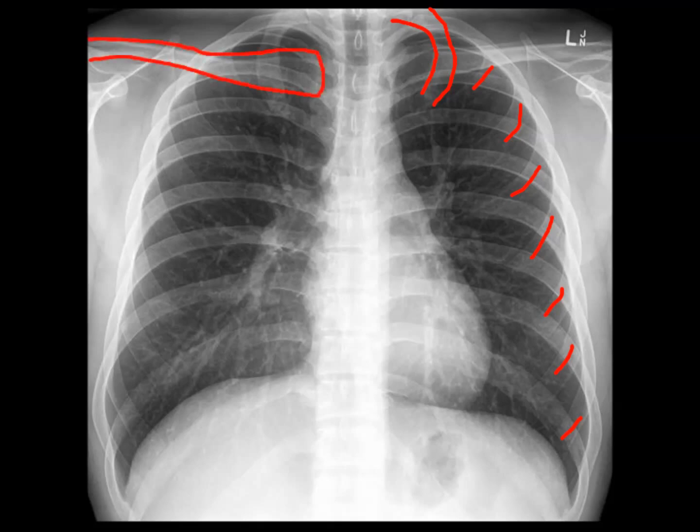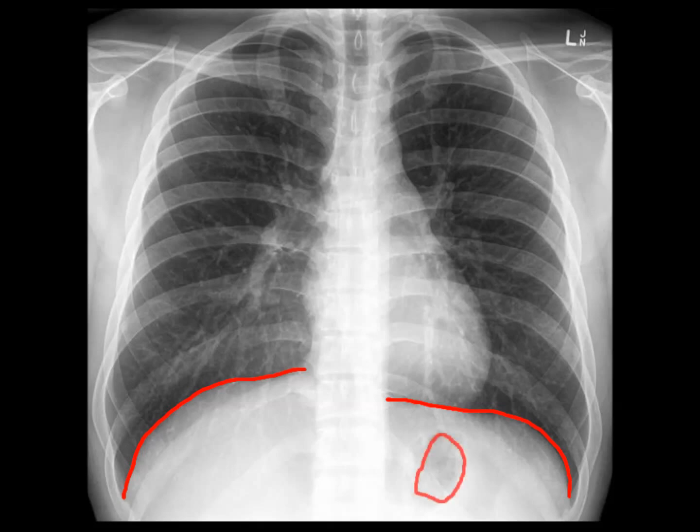The next bit outlined is the right clavicle. The borders of the diaphragm are outlined here. Notice that the right hemidiaphragm is higher than the left — this is normal and is due to the liver lying underneath. On the left side, you might see a bubble under the diaphragm: this is a gastric bubble in the stomach and is a normal finding.